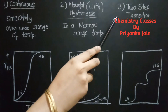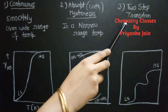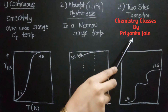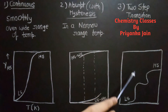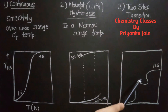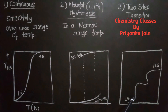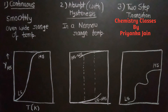The third type is the two-step transition, where the transition from high spin to low spin occurs in two distinct steps — a stepwise transition. This concludes the discussion on spin crossover.